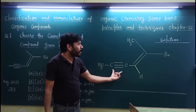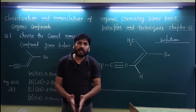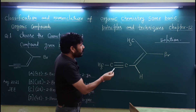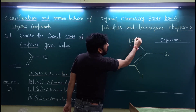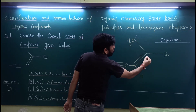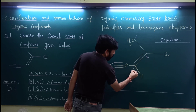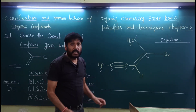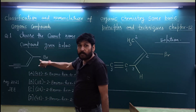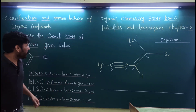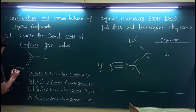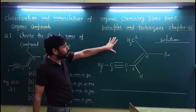अब हम इसका nomenclature करते हैं। Nomenclature का rule होता है कि हम longest chain select करते हैं। तो इस compound में longest chain यहाँ से होगी: CH3 — 1, फिर 2, 3, 4, 5 और 6 — 6 carbon की longest chain है।